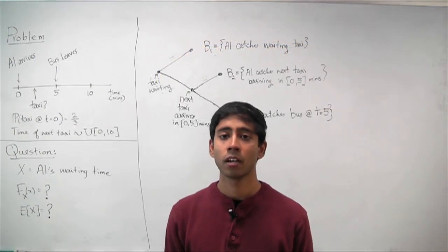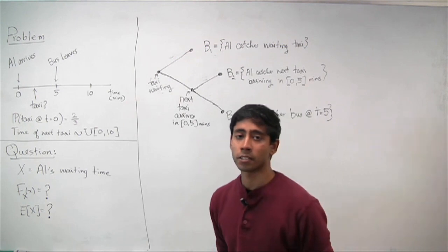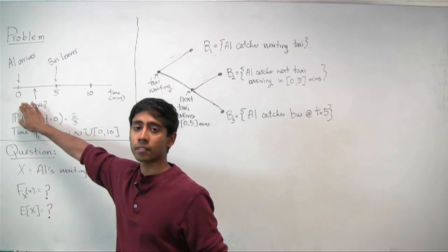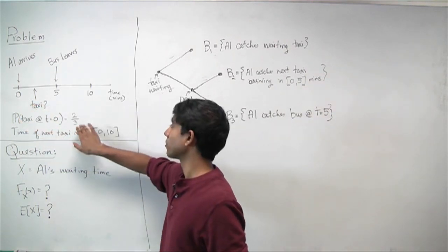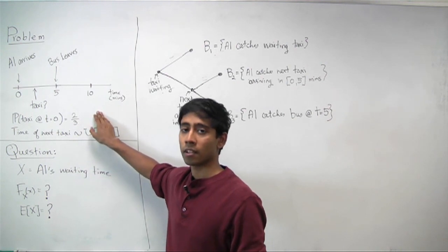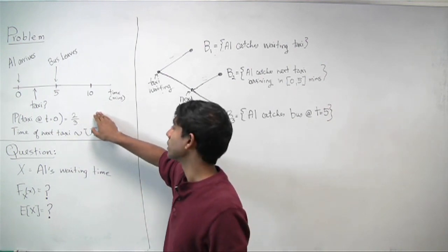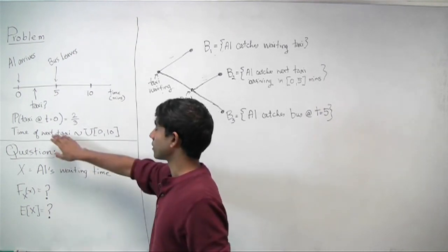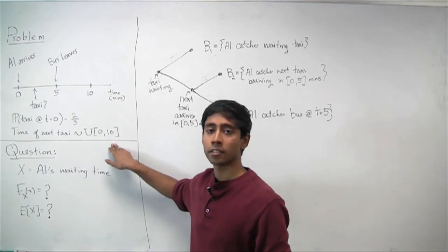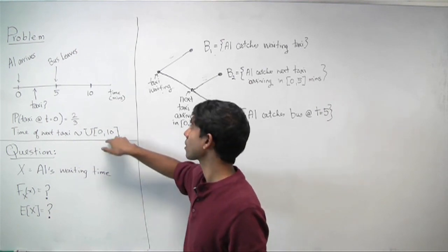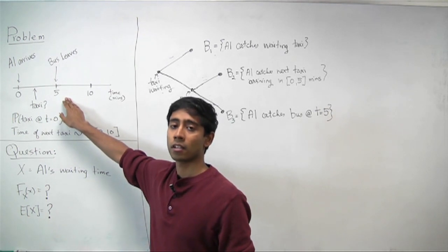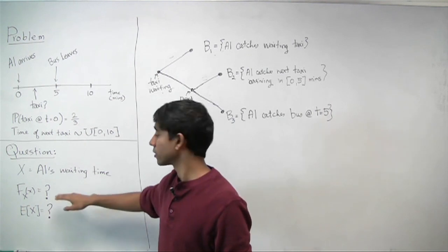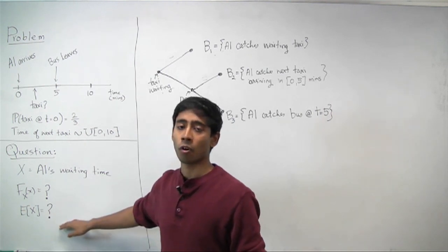The problem is as follows. Al arrives at a bus stand or taxi stand at time t equals zero. He finds a taxi waiting for him with probability two-thirds, in which case he takes it. Otherwise, he takes the next arriving taxi or bus. The next taxi arrives between zero and ten minutes, uniformly distributed, and the next bus leaves exactly in five minutes. If X is Al's waiting time, what is the CDF and expectation of X?